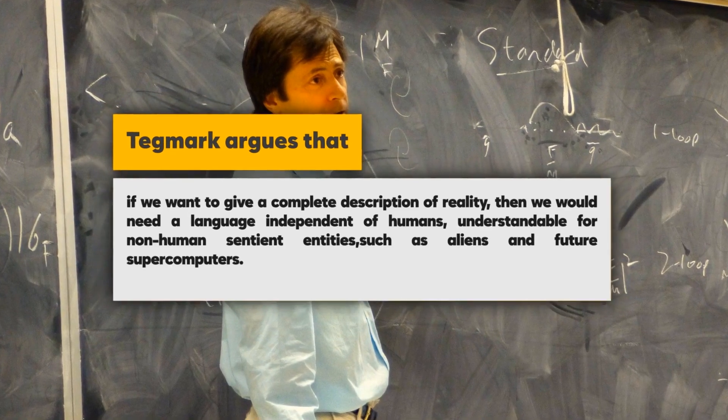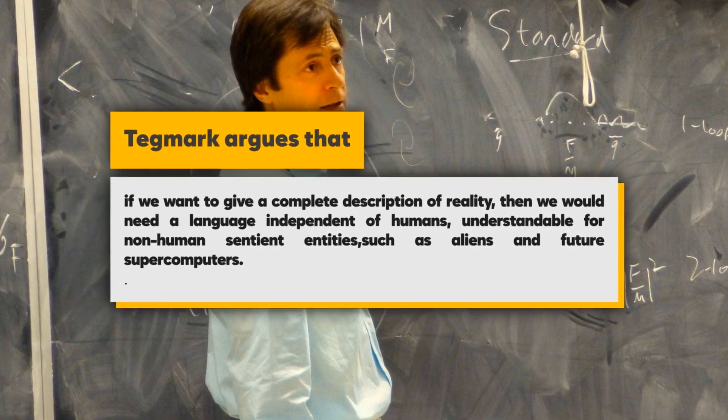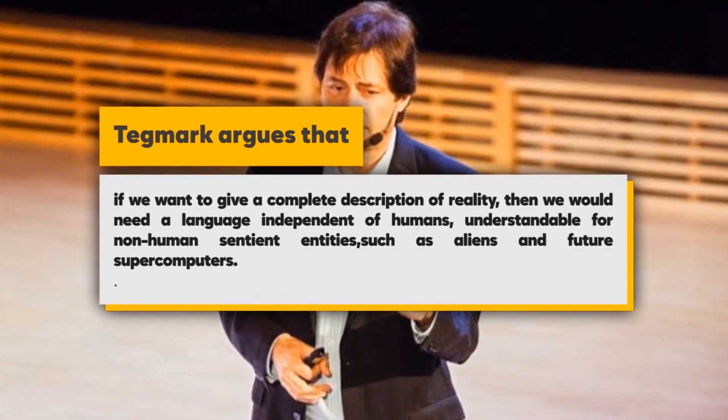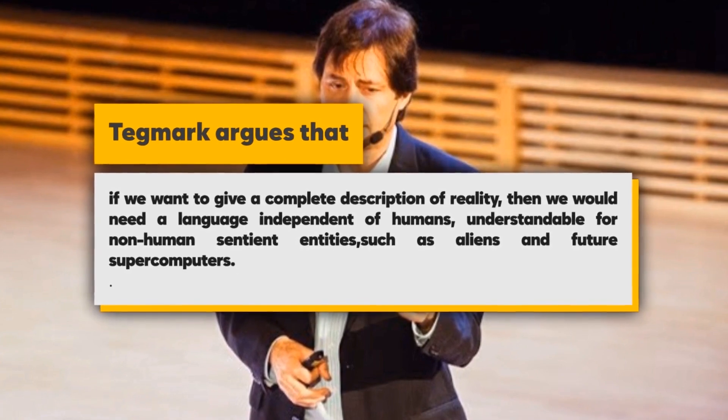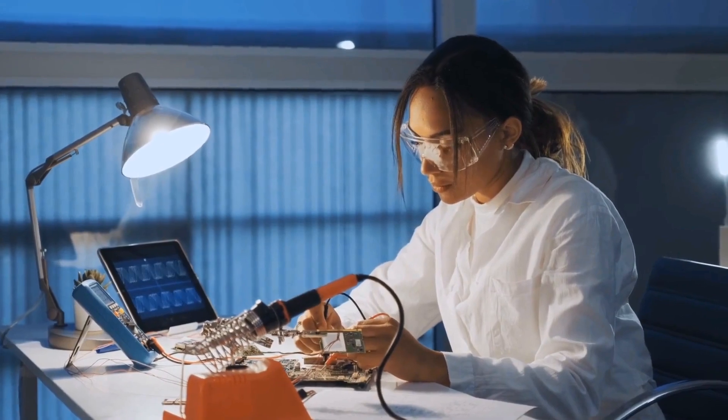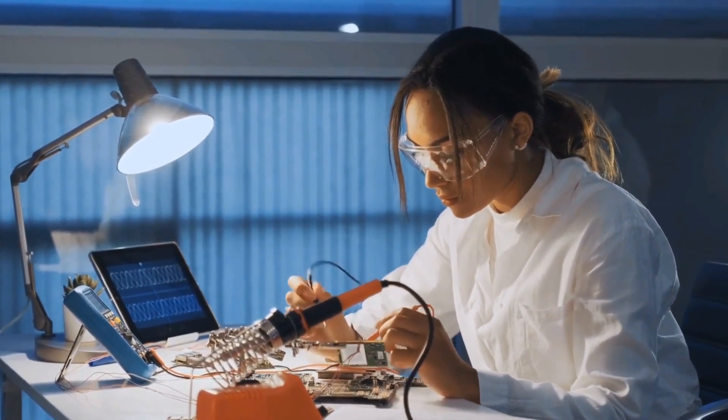Tegmark argues that if we want to give a complete description of reality, then we would need a language independent of humans, understandable for non-human sentient entities such as aliens and future supercomputers. There may be universes out there that have creatures looking like us, but are way too advanced.